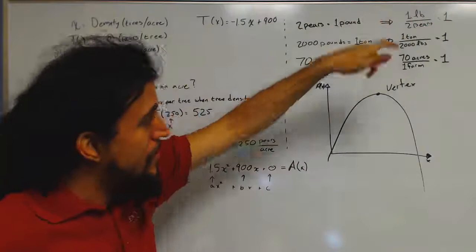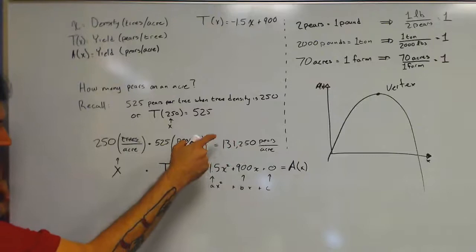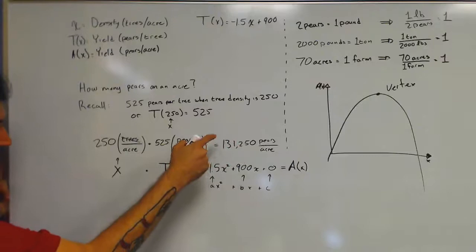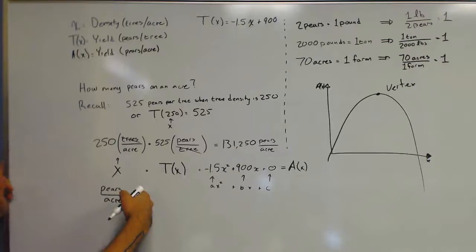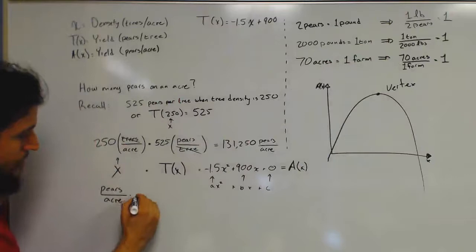So in the same way that the units canceled out here, what we end up with is our A of x is in terms of pairs per acre. And then we know that we have to convert from pairs to pounds. So we use this guy here first. So it's going to be one pound over two pairs.